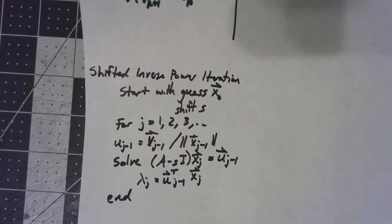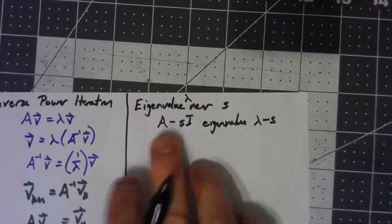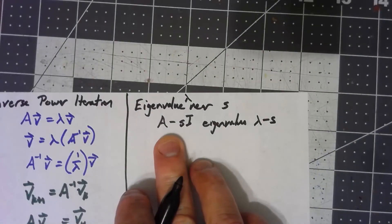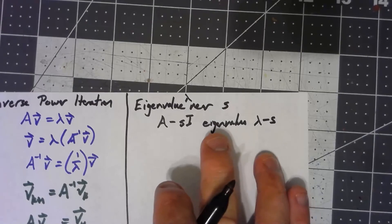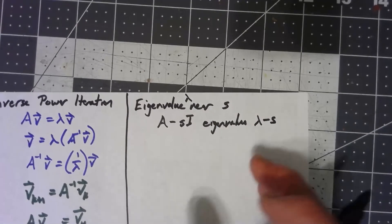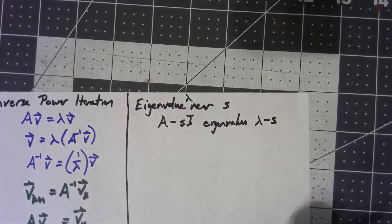By shifting to the right thing, shifting so that this A minus s I has the smallest eigenvalue, its inverse has the largest eigenvalue, and we're finding that.